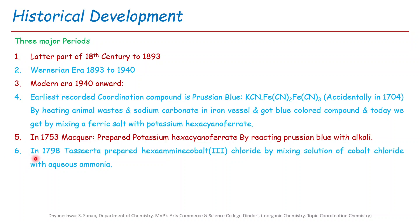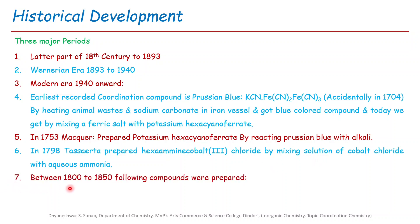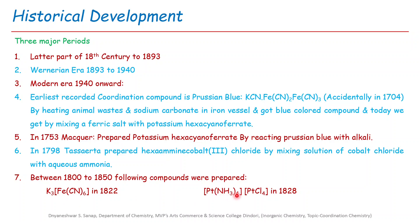In 1798, Tassaert prepared hexaammine cobalt(III) chloride by mixing cobalt chloride solution with aqueous ammonia. Between the 18th century and 1815, several compounds were prepared: K₃[Fe(CN)₆] in 1822; [Pt(NH₃)₄]Cl₂ and PtCl₄ in 1828; and sodium [Fe(CN)₅(NO)] in 1849.